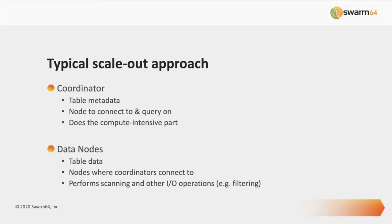This is a very typical scale-out approach: you split nodes into two types. The coordinator node does not hold data itself — it only knows about metadata, so it knows how to access the data. When it needs to access data, it hands off to the data nodes which perform the IO operation and hand the data back. The data nodes can also pre-aggregate or filter data, giving only a subset back to the coordinator to reduce the number-crunching load, making more space to do other valuable things.